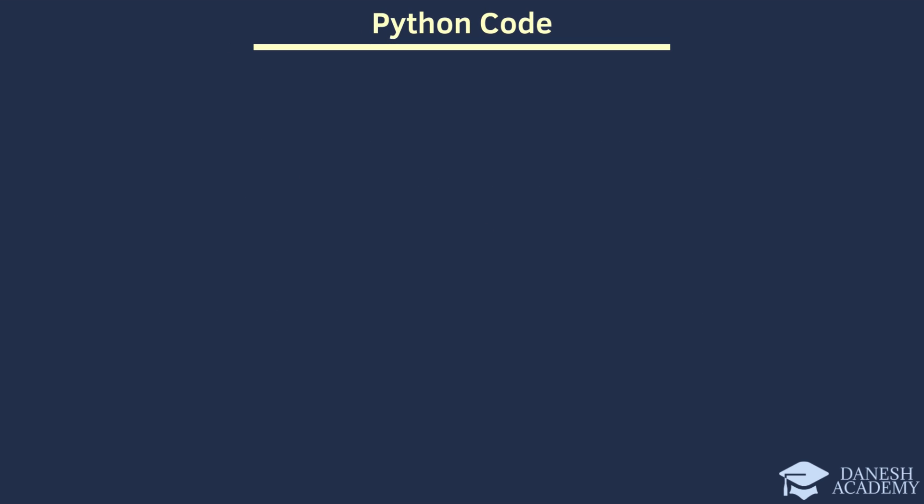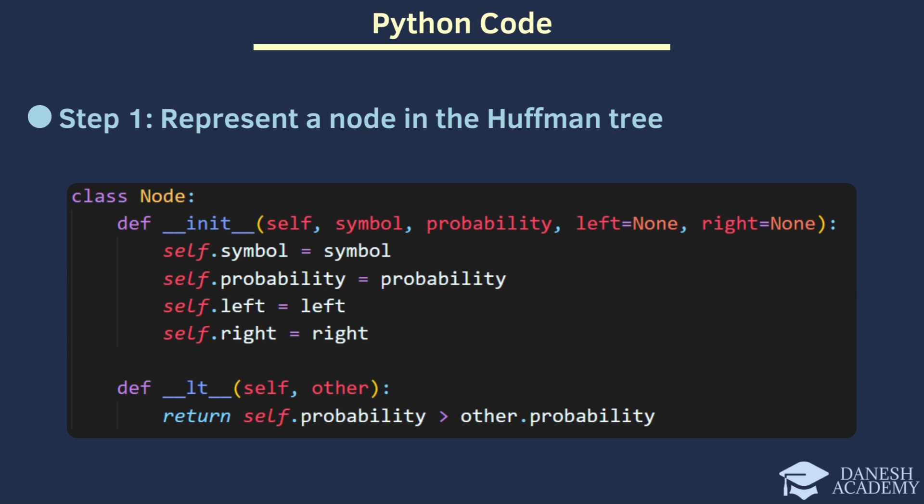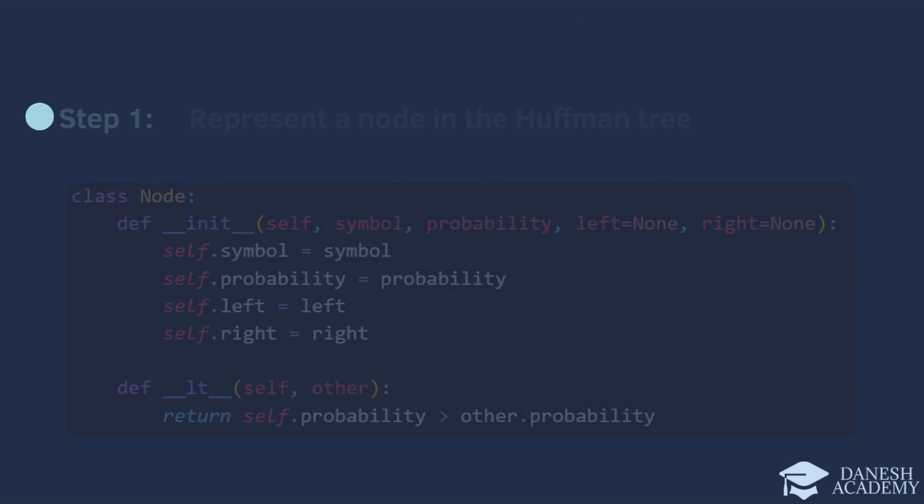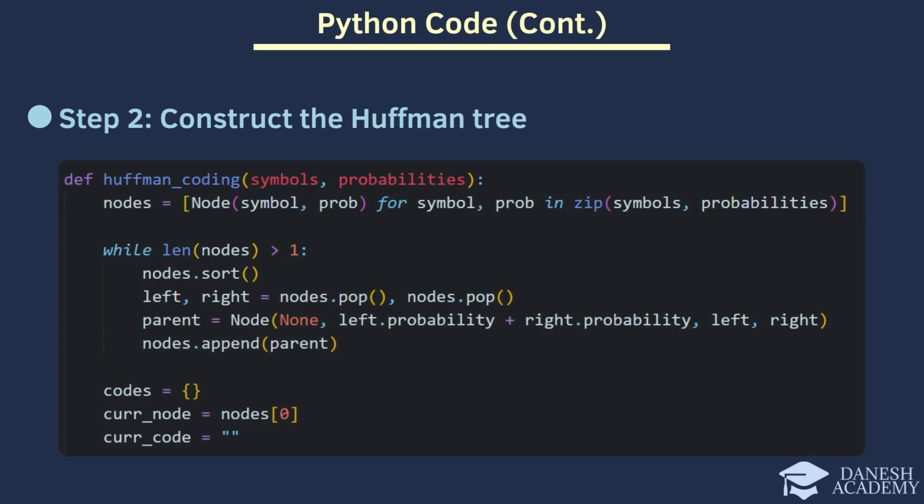Now let's take a look at Python code. Firstly, let's understand how we represent a node in the Huffman tree. Each node contains a symbol, its probability, and references to its left and right children forming a binary tree structure. In the second step, we construct the Huffman tree. We start by creating nodes for each symbol and its chance of occurring. Then we continuously merge the two nodes with the lowest probabilities, creating a new parent node with the combined probability until we have merged all nodes into a single tree structure.